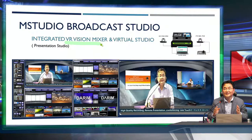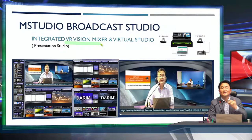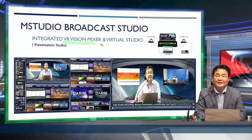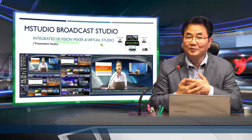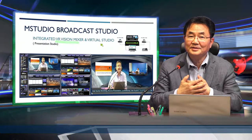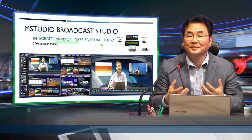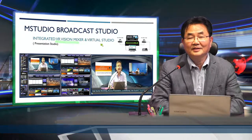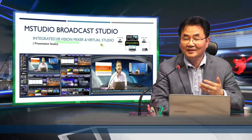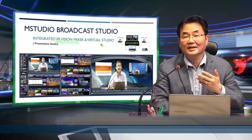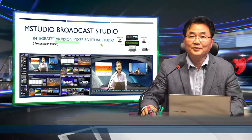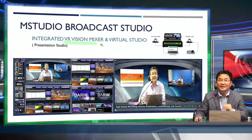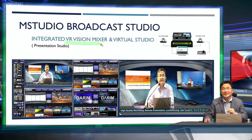I'm trying to put another name: VR vision mixer - a production switcher mixer with a virtual studio. Many vision mixers have chroma key and background mixing but it's not the same as what I'm doing now. The vision mixer with a virtual studio is a different terminology. Some products in the market claim that function but they're not really virtual as I'm showing right now. Everything in M-Studio is really flexibly designed so any novice person can easily understand how it works.